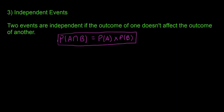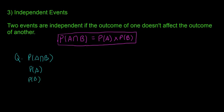Rule number three is independent events. Two events are independent if the outcome of one doesn't affect the outcome of another. In math this means the probability of A intersect B, or A and B, is equal to the probability of A times the probability of B. A question you'd probably get asked would be to prove that two events are independent, or investigate if they're independent. You need to find P(A∩B), P(A), and P(B), stick them into this formula, and if the left-hand side equals the right-hand side, the events are independent; if not, they're dependent.